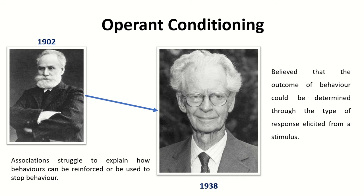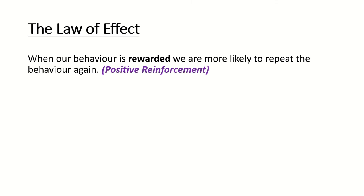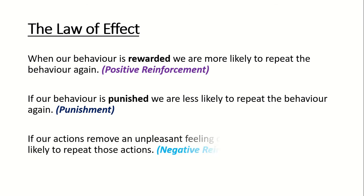Skinner believed that the outcome of behavior could be determined through the type of response elicited from the stimulus. If we associate something positive with a neutral stimulus, we are actively going to start to seek out and try to engage that behavior again. If we associate something negative with a neutral stimulus, we're going to try and avoid that situation — and he referred to that as punishment. Now Skinner based his ideas on another psychologist's work called Thorndike. We don't need to know the name or research of Thorndike — we just need to know the law of effect: when our behavior is rewarded, we are more likely to repeat that behavior again. That's what Skinner called positive reinforcement. If you are rewarded for doing something, you are actively going to try to receive that same reward again.